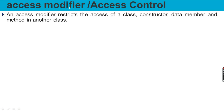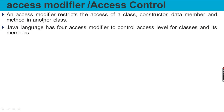So the access modifier is used to restrict the access level of a class, a constructor, data member, and methods of another class. Restrict access to another method. If you have access to another method, you can access to another method. If you have a default, then you can use the access modifier.